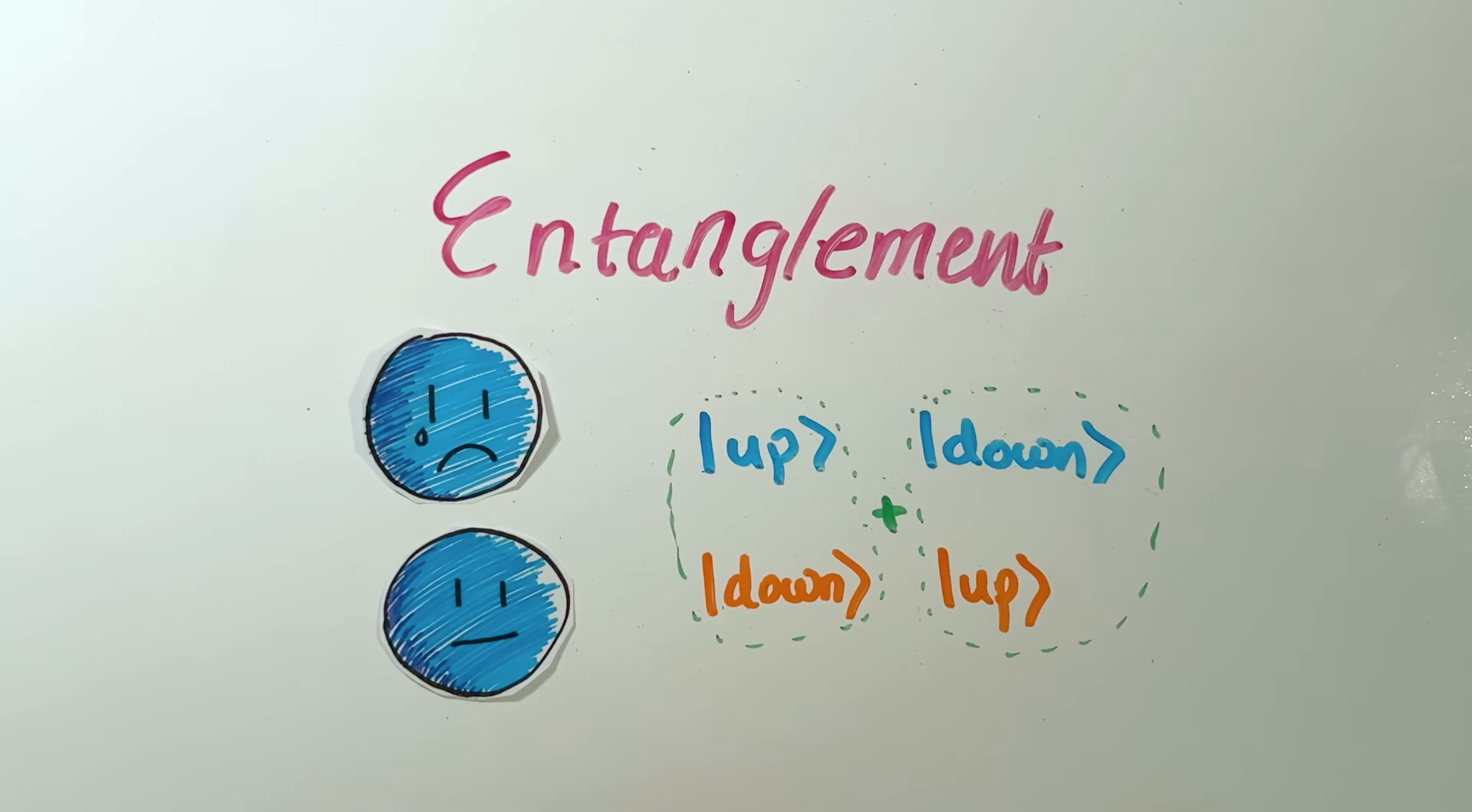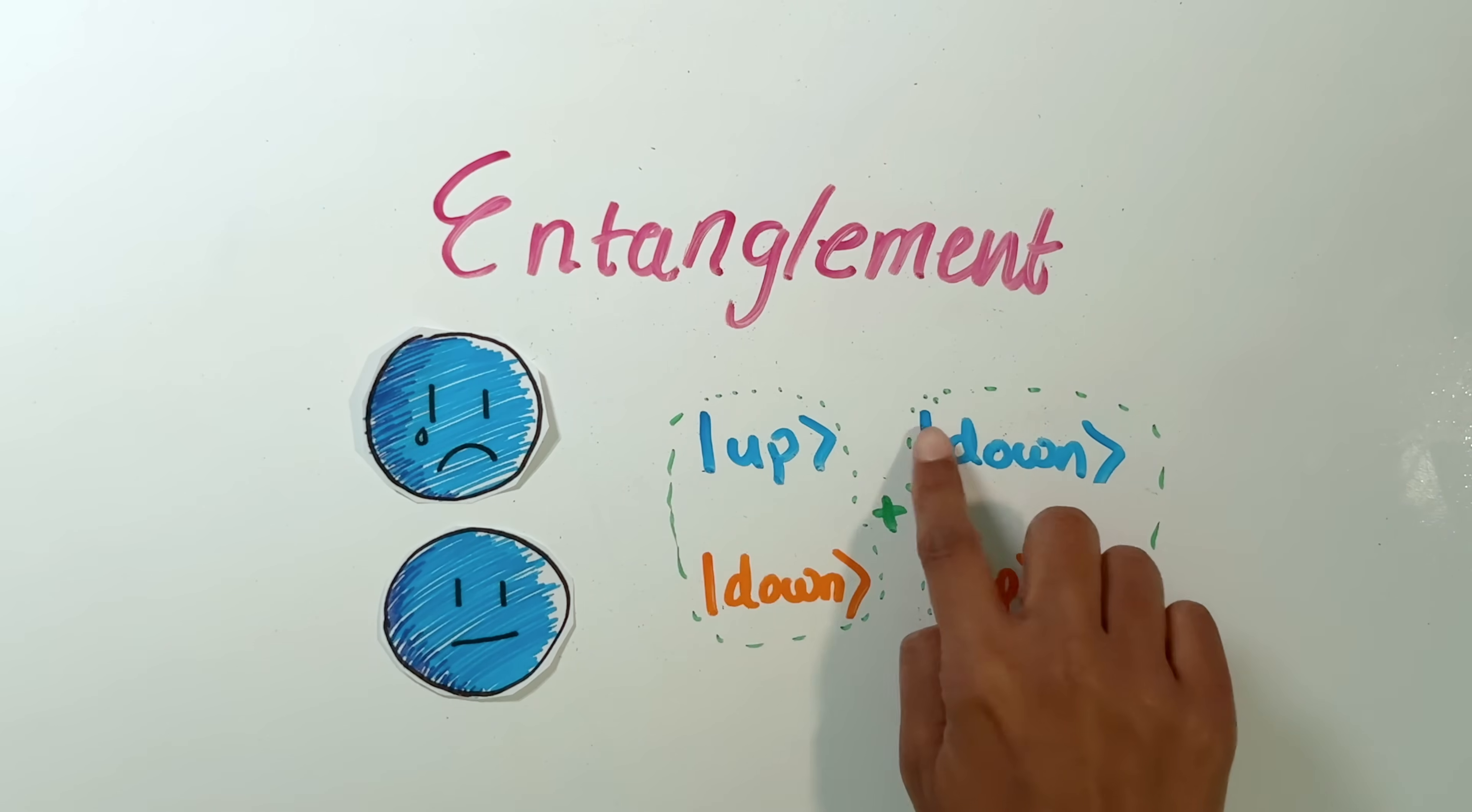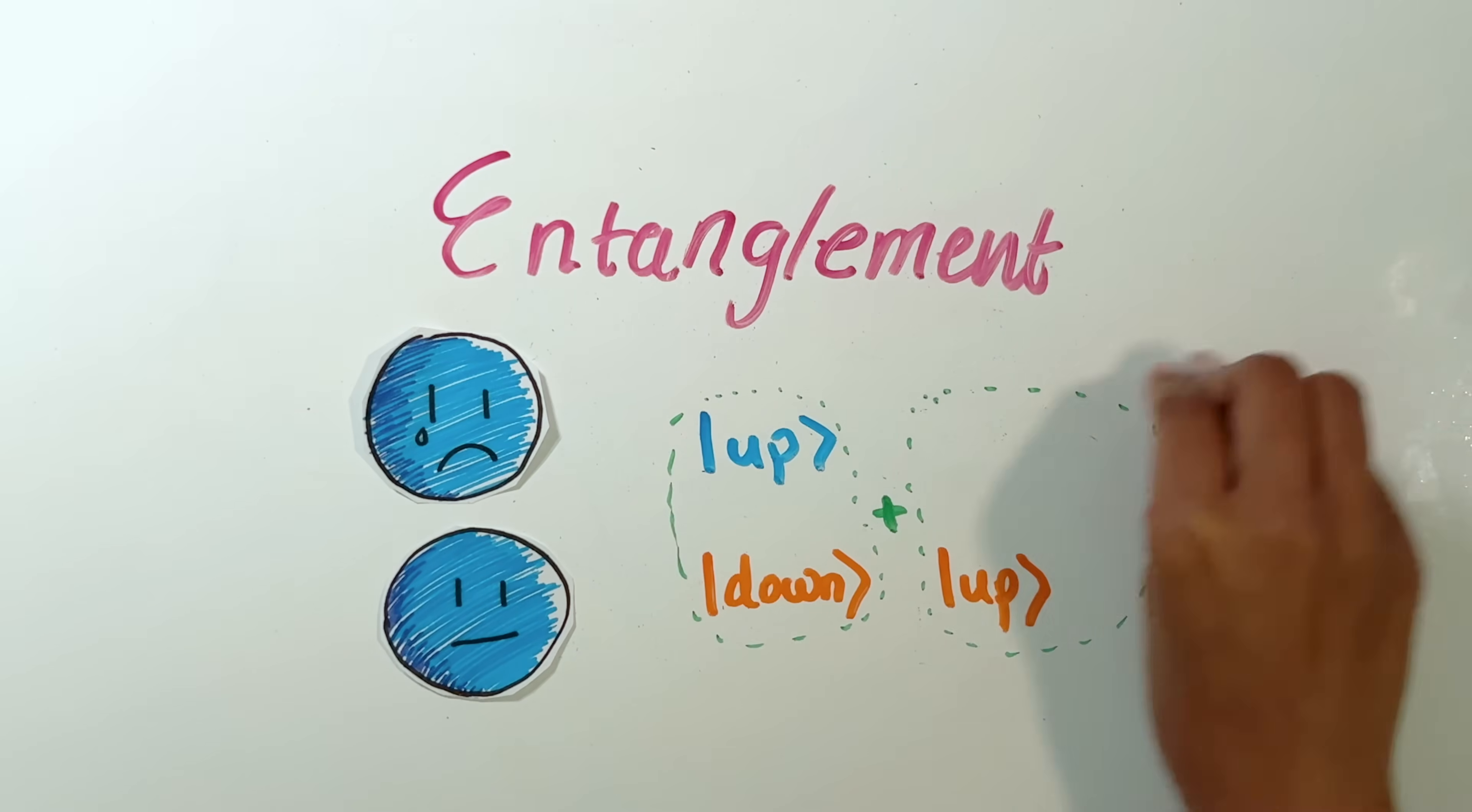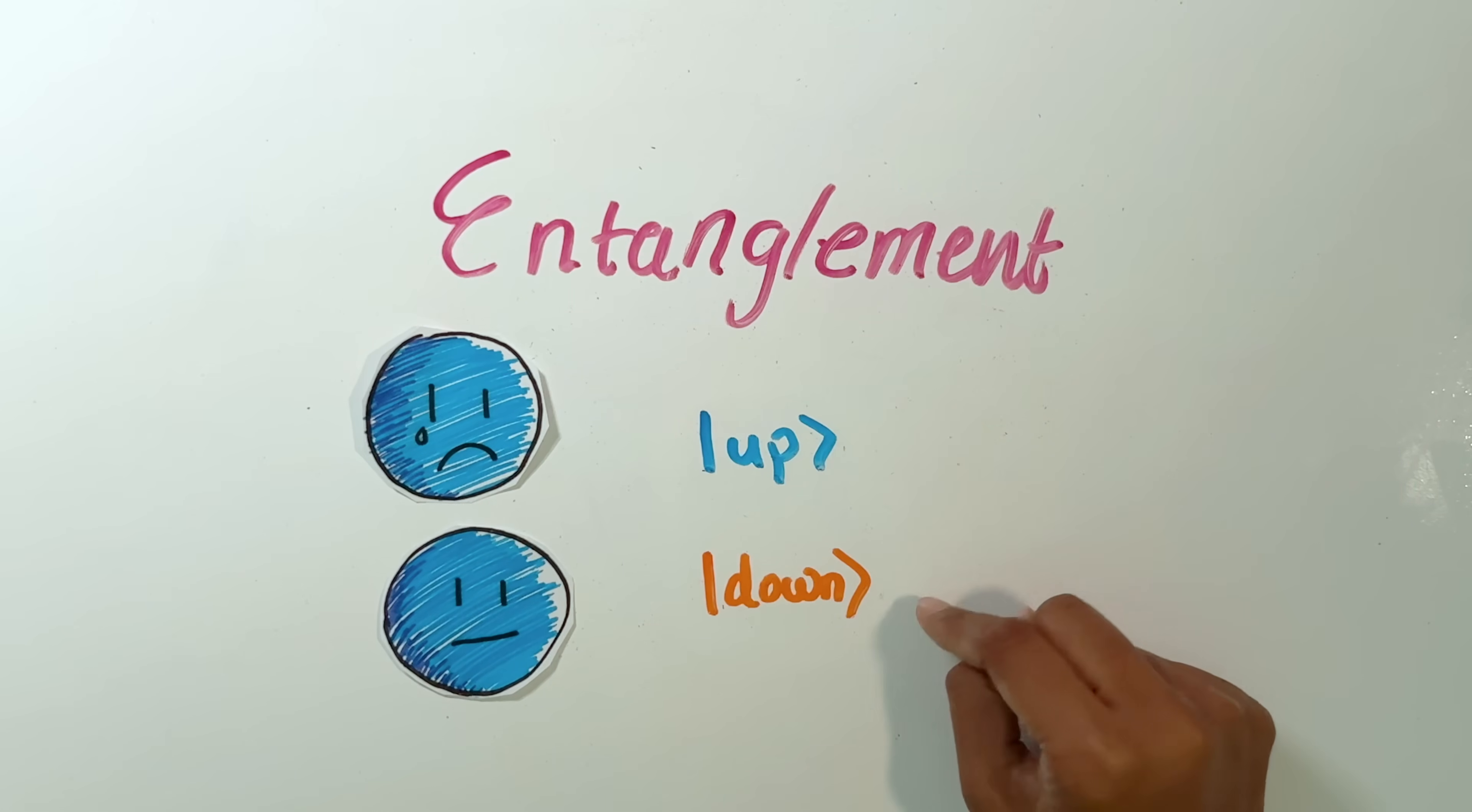So what happens to the quantum state? It needs to collapse so that only up happened. So this is certainly gone. And now you can see that this bit should also go. Because this isn't a possibility anymore. Up for the second electron is no longer possible. And so it disappears as well. And now the new state of our two electrons is up and down.